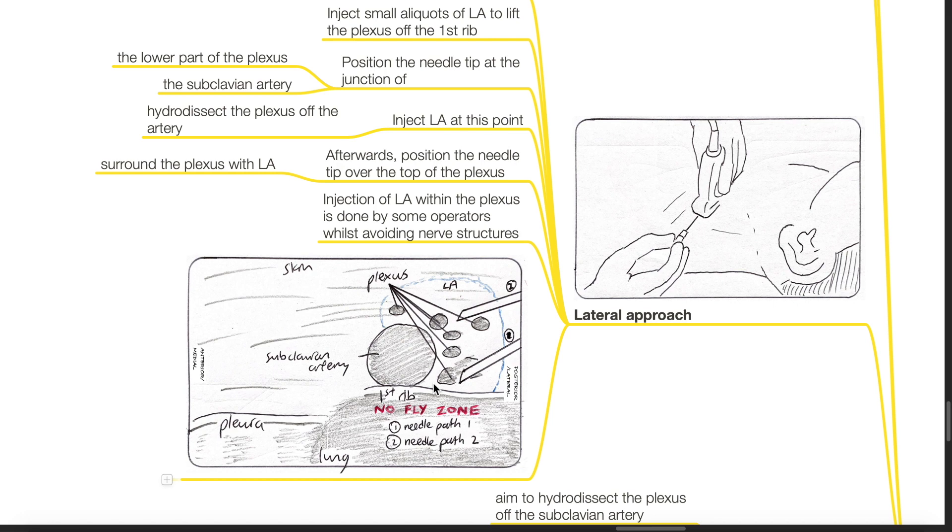Inject local anesthetic at this point. Hydrodissect the plexus off the artery. Afterwards, position the needle tip over the top of the plexus and surround the plexus with local anesthetic. Injection of local anesthetic within the plexus is done by some operators while avoiding nerve structures.